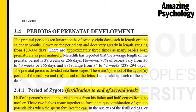If it goes above 280 days the child is considered post-mature, and if it goes under then the child is considered premature. The number of children born post-mature are very minimal, whereas the number of children born premature are about three times those born post-mature. Prenatal development is divided into three important stages: the period of the zygote, the period of the embryo, and the period of the fetus.